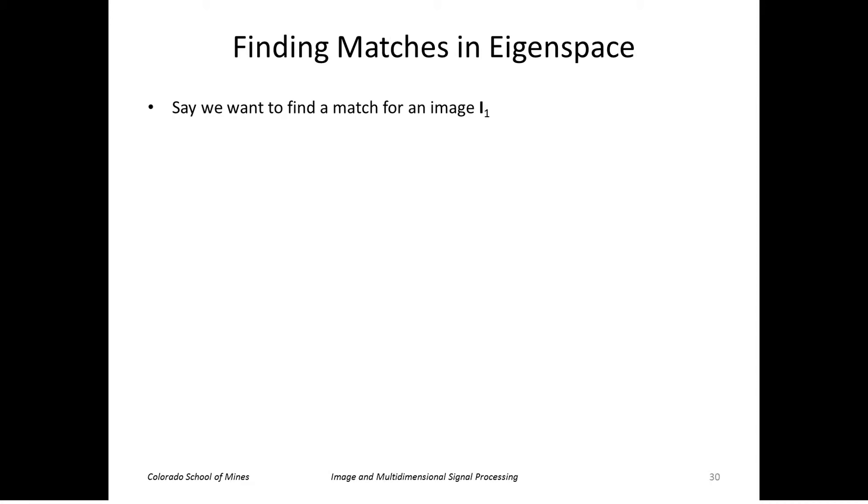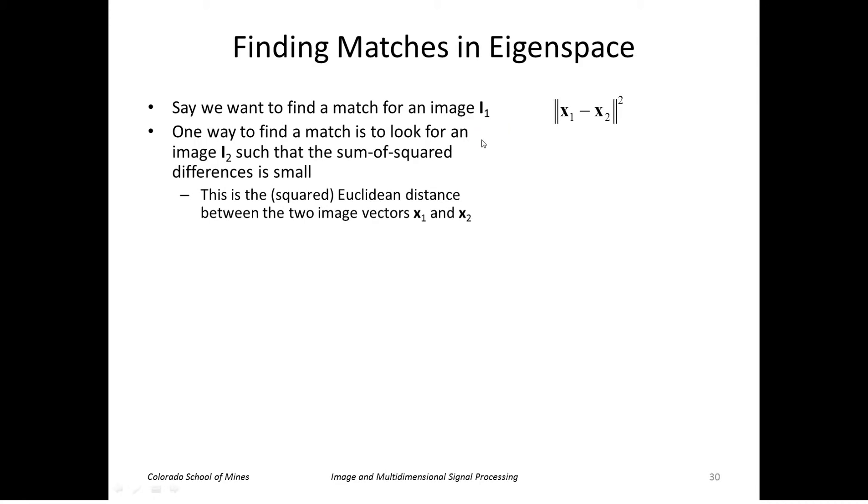All right, so let's look at how to use this PCA for finding matches or searching matches for images. So let's say we want to find a match for an image, let's say a face, call it I1. So we search through our database of images looking for an image I2 such that the sum of squared differences, pixel by pixel, is small. So since we can put these images into vector form, that would be the same as taking the squared error or difference between x1 and x2.